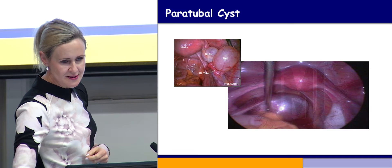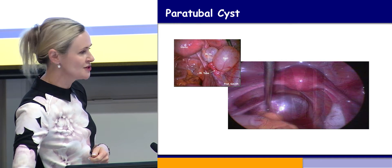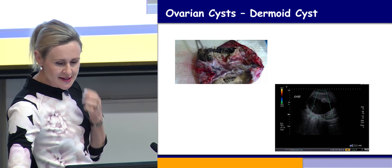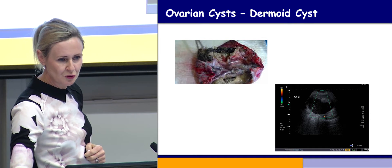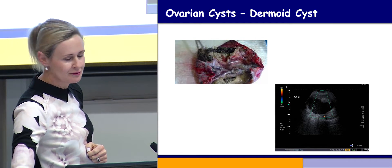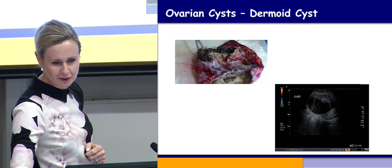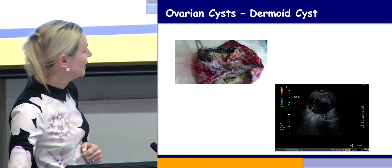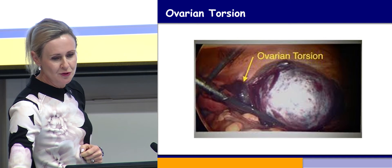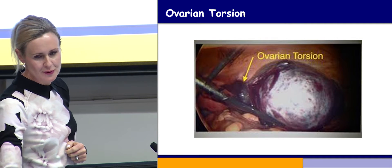This is a picture of a paratubal cyst, which comes from Mullerian remnants, and is also a very common finding — often incidental at laparoscopy. But sometimes they can tort and give pain. And this is the classic dermoid with hair and teeth, which looks really quite ugly when cut open. The ultrasound appearance shows the classic nodule in the middle and debris within the cyst itself. One of the most urgent things with ovarian cysts is if they tort, because that can result in loss of the ovary if urgent gynaecological help is not sought.